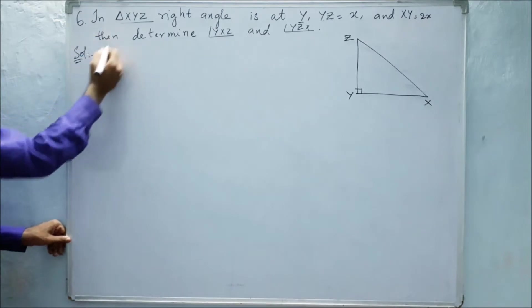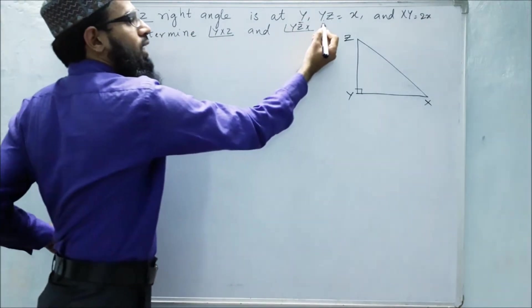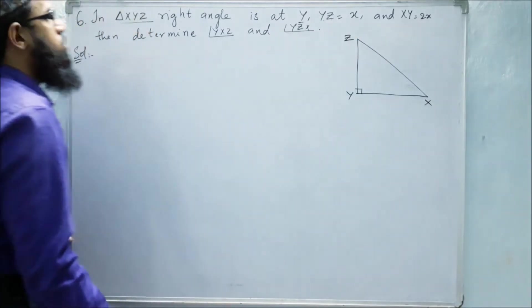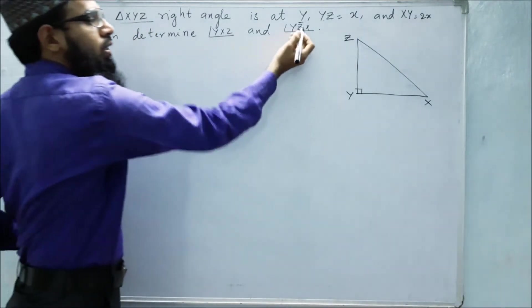In the sixth problem, they said that triangle XYZ is right-angled at Y, and YZ equals x, and XY equals 2x. Then we have to find the value of angle X and angle Z.